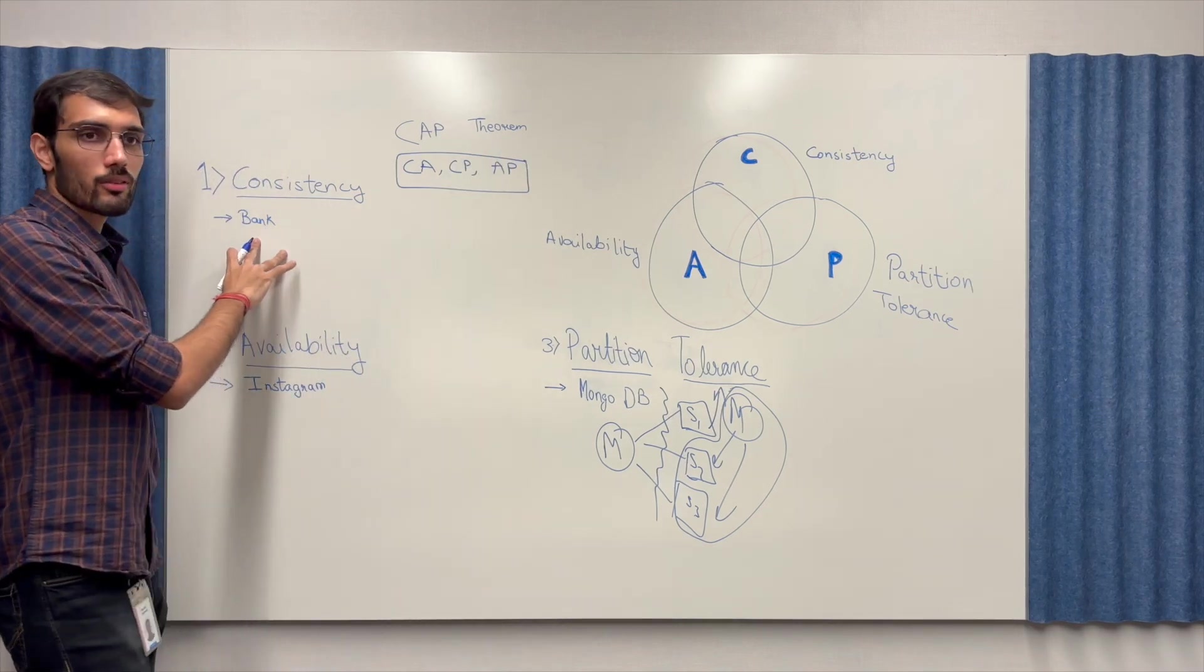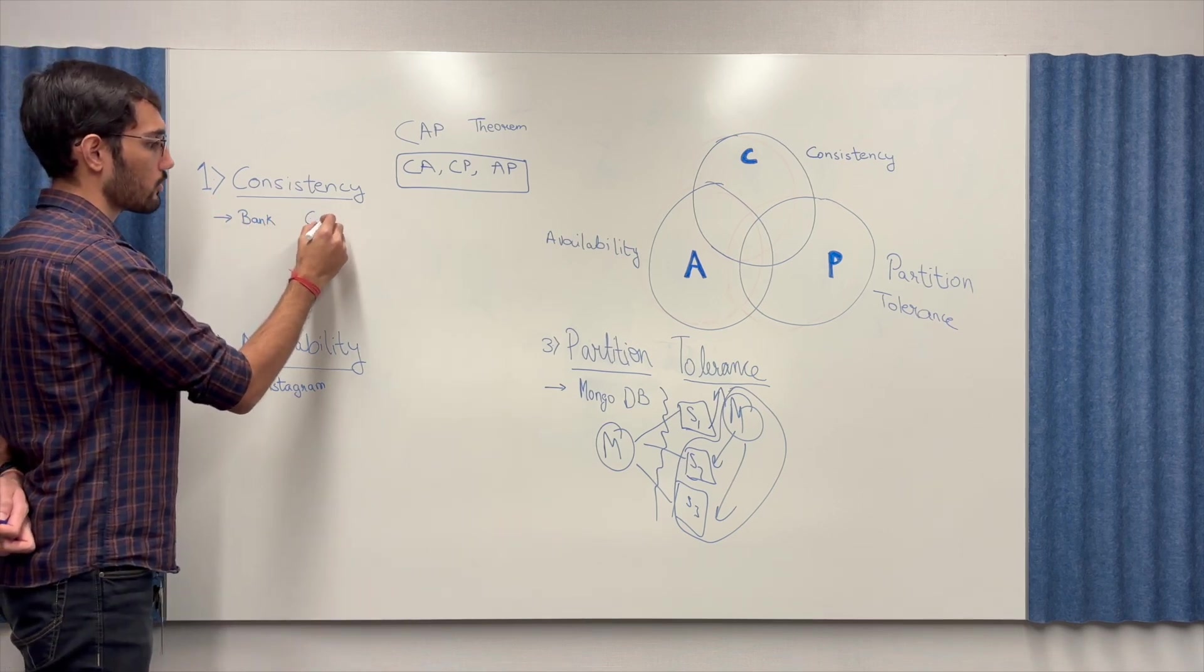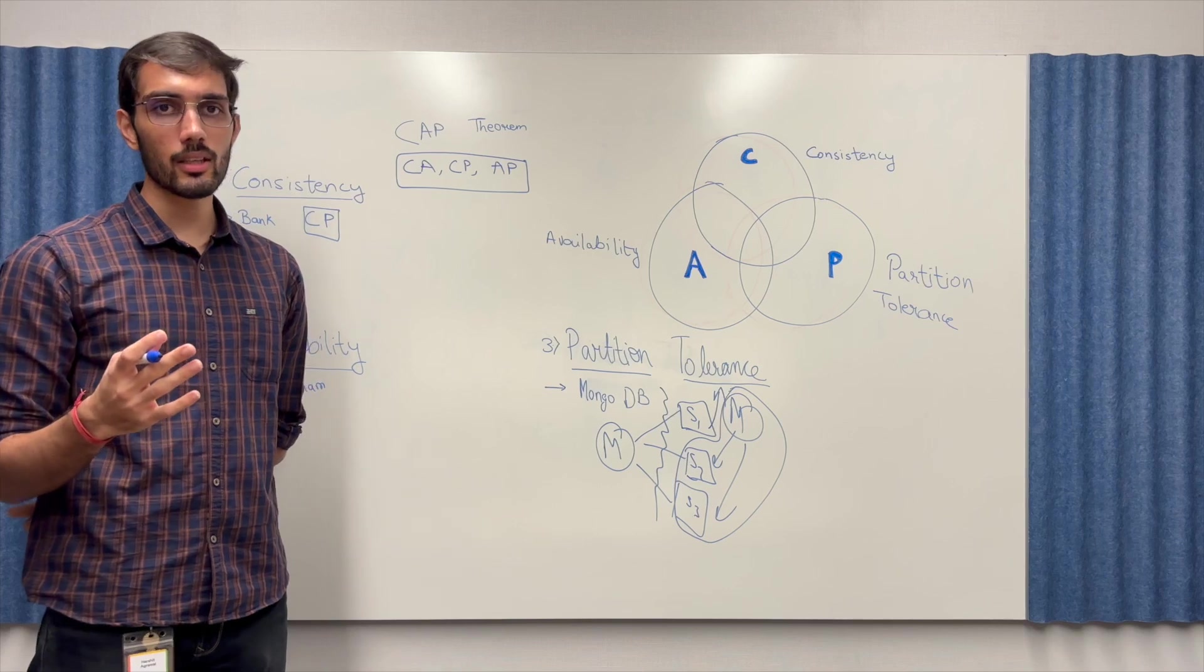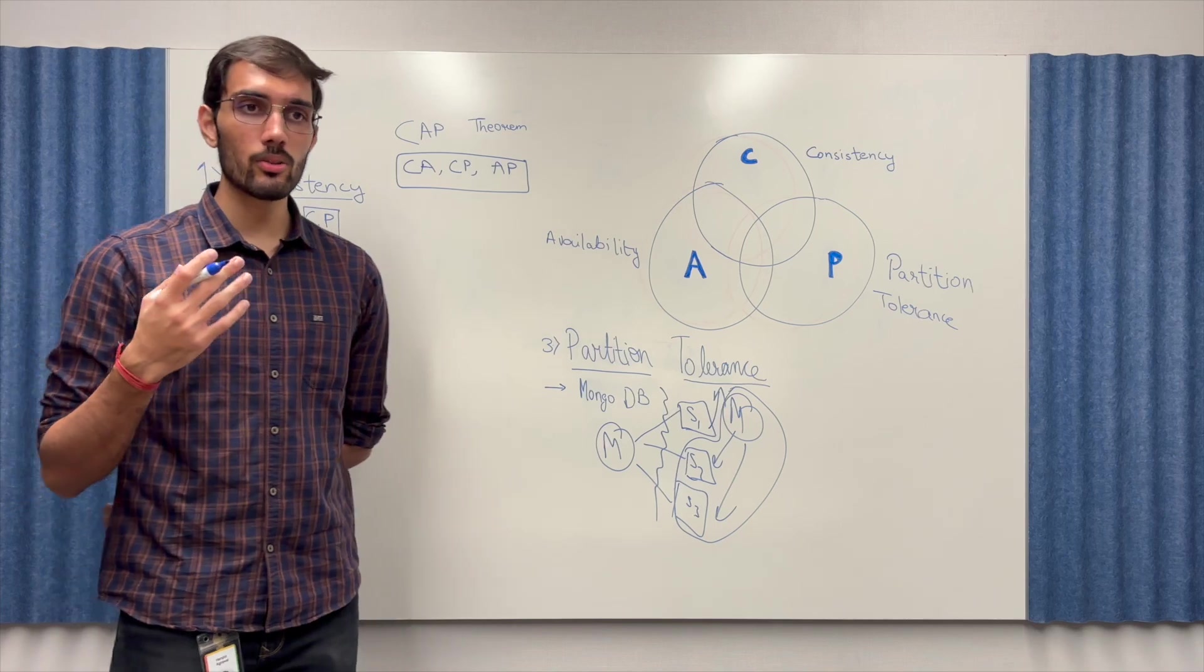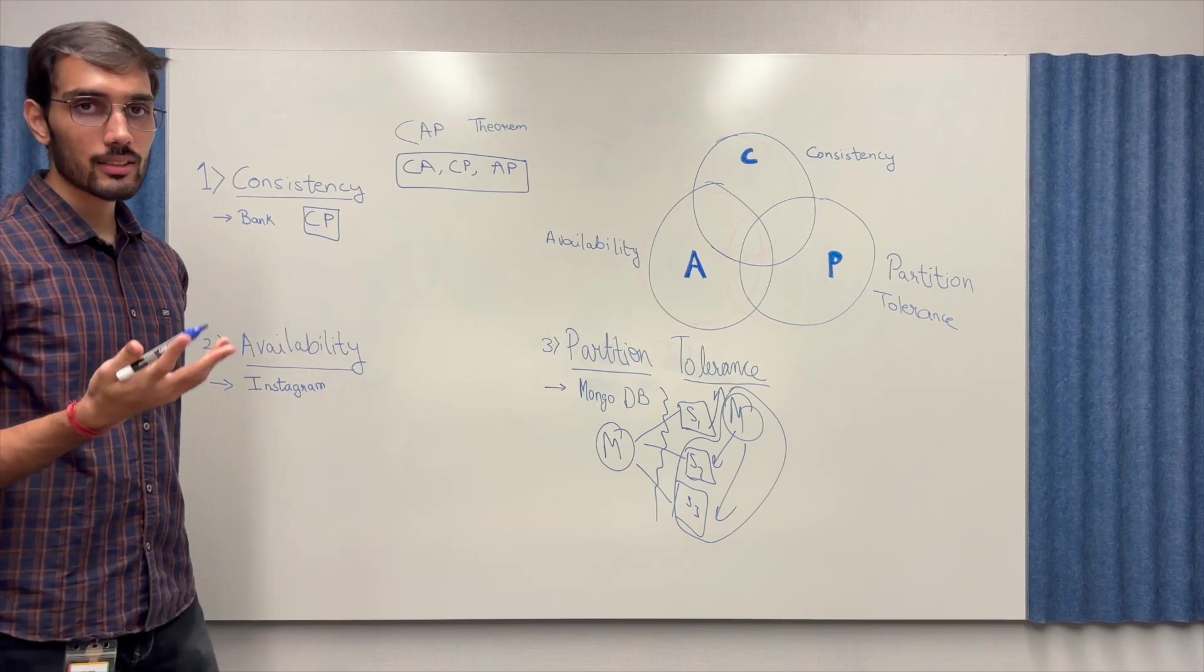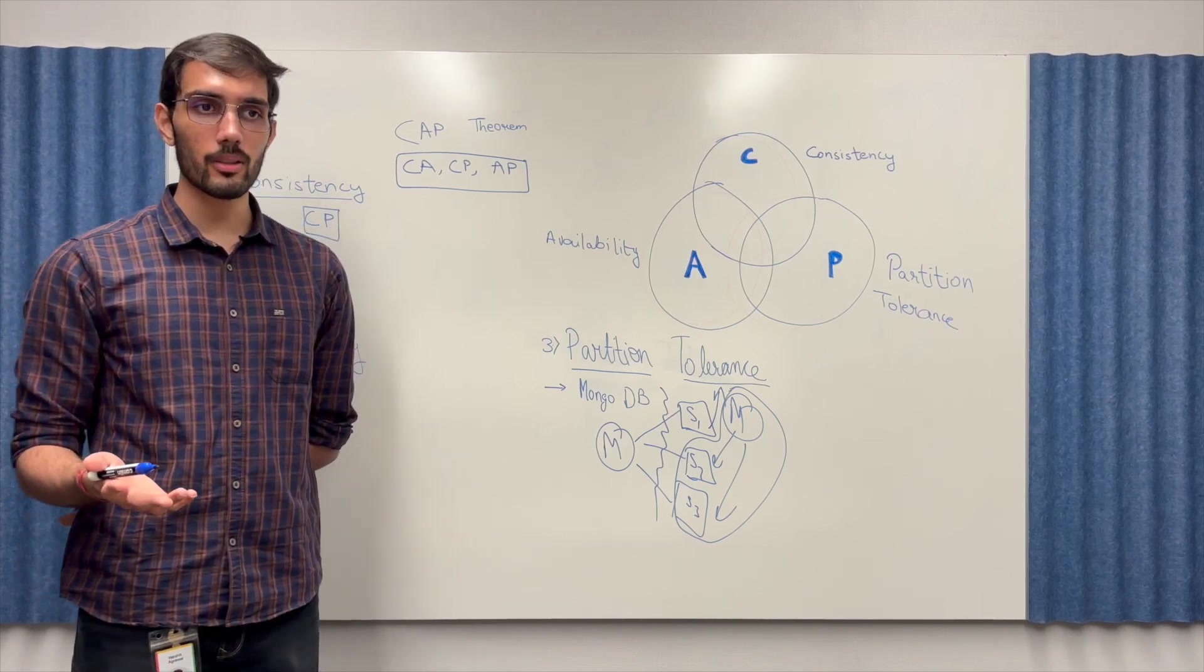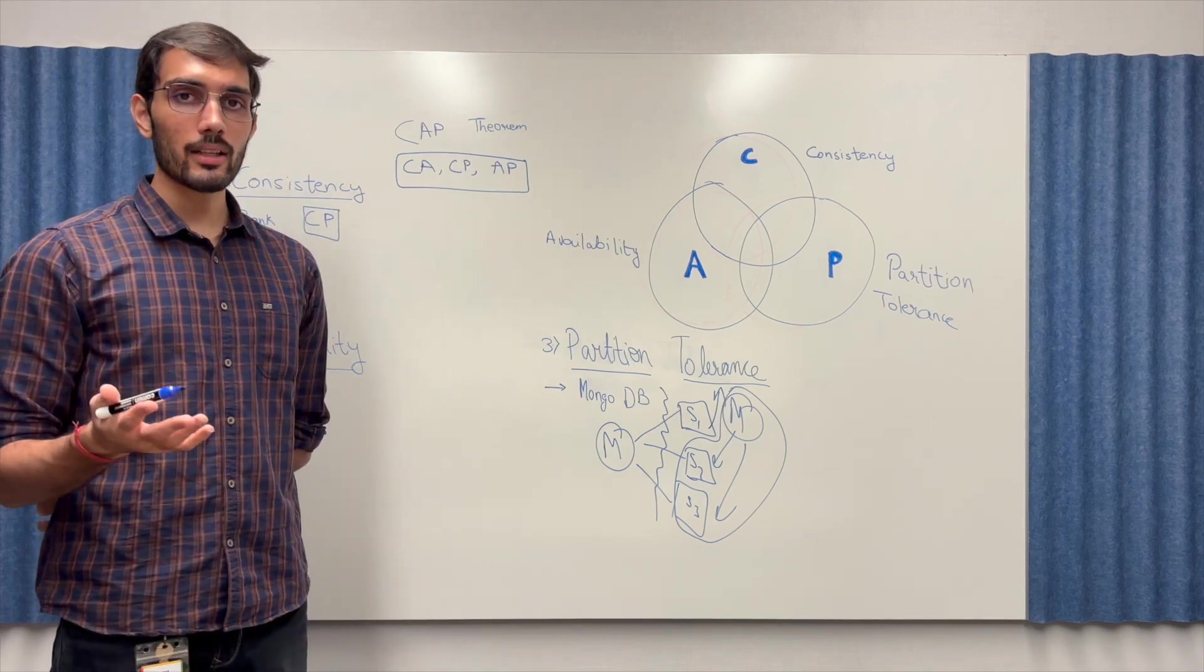In the example of bank that we mentioned, bank systems are usually CP systems. That is because even if there's a partition in the server we shouldn't be, the bank system should be tolerant and it should be able to recover itself and be up and running again. And as I already mentioned it should be consistent. But imagine if you are trying to be partition tolerant and consistent then you can't be available because your nodes will take some time to recover and at that point in time your bank server will go down.